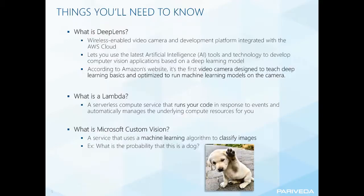Some things you'll need to know beforehand: what exactly is a DeepLens? It is a wireless-enabled video camera and development platform integrated with the AWS cloud. The easiest way to think of it is that it's a learning tool created to help developers interested in development tech get started very quickly, and that's how we've used it and how the rest of the community has generally used it as well.